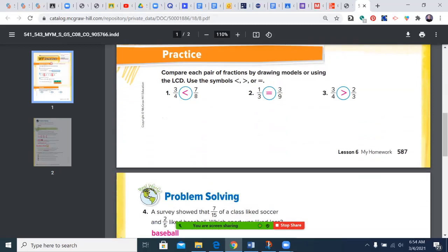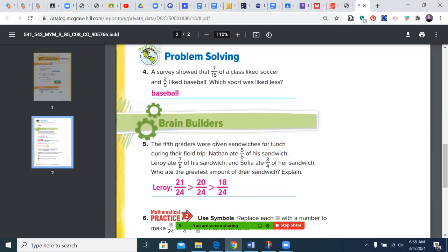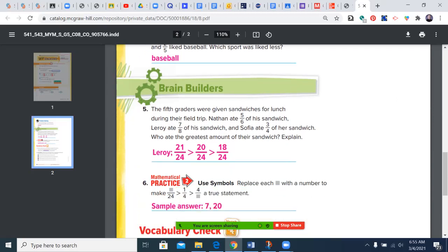So as we looked at the assignment, the least common multiple of four and eight is eight, so this becomes six-eighths, which is less than seven-eighths. Least common multiple of three and nine is nine. So this becomes three-ninths, which is equal to three-ninths. Least common multiple is 12 on this one, so it would be nine-twelfths is greater than eight-twelfths. Problem solving, comparing seven-fifteenths and two-fifths, which is really six-fifteenths. Baseball was liked less.